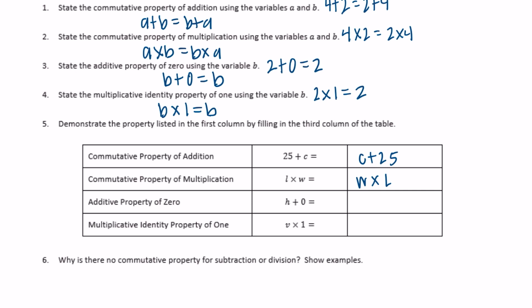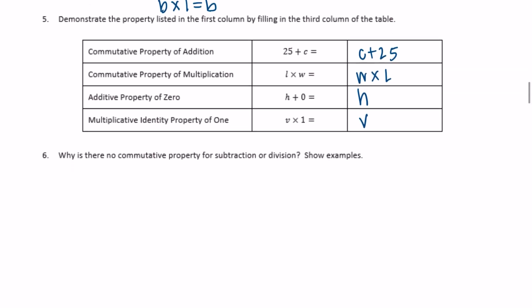Number six: Why is there no commutative property for subtraction or division? Show examples. Let's try something for subtraction. If we had four minus two, does that equal two minus four? Well, four minus two is equal to two. Is two equal to two minus four, which is negative two? No, that doesn't work. You can't flip the order of a subtraction problem. We already know this, if you flip the order it's a different problem.